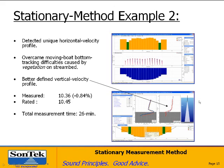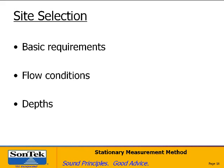Now we're going to talk about site selection and some basic requirements. One hopefully obvious requirement is that you need to have access for your boat to the cross-section. You need something like a bridge, a cableway, a small walkway, or some type of pulley system, because the boat has to be positioned at fixed locations in the cross-section.